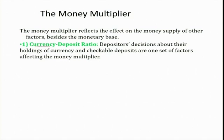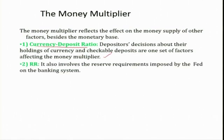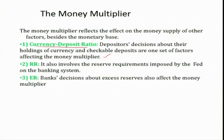The money multiplier reflects the effect of three factors besides the monetary base. First, the currency deposit ratio — depositors' decisions about currency versus checkable deposit holdings. Second, the required reserve ratio — reserve requirements imposed by the Fed on the banking system. Third, excess reserves — the banking system's decisions about how much excess reserve to hold.